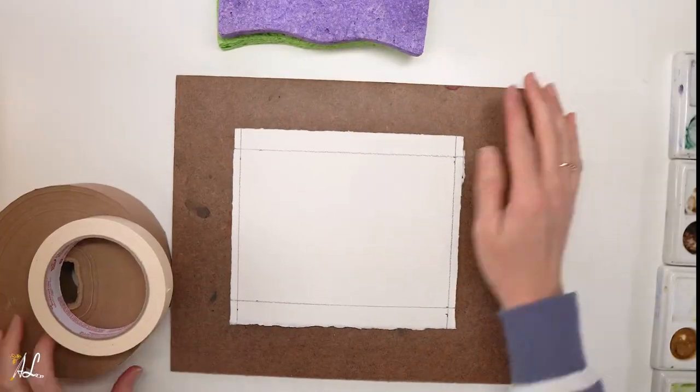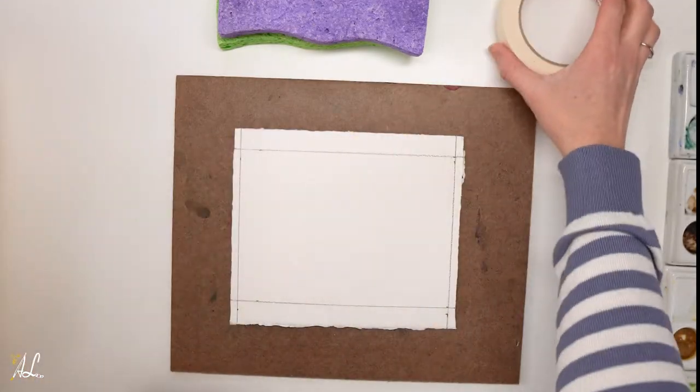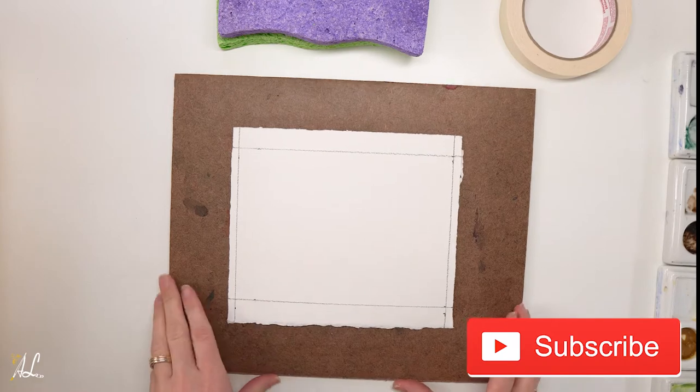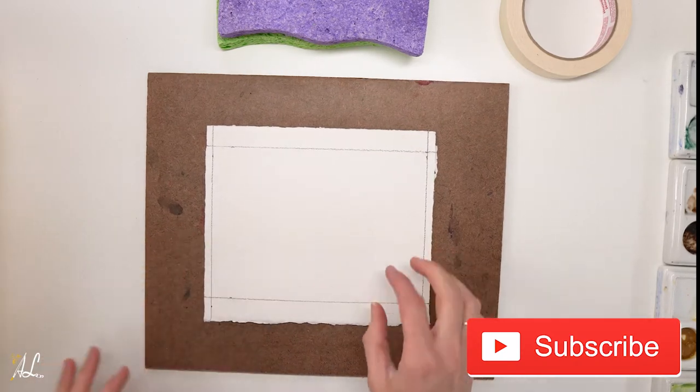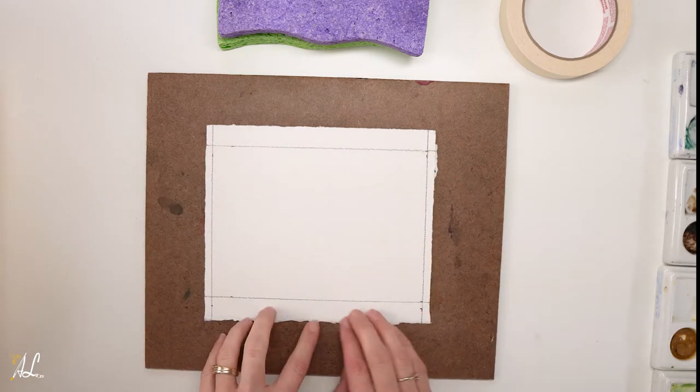First we're going to start with taping our paper. You'll need watercolor tape and masking tape. We're going to measure out the size of our painting first so we know how large or small we want our painting to be.